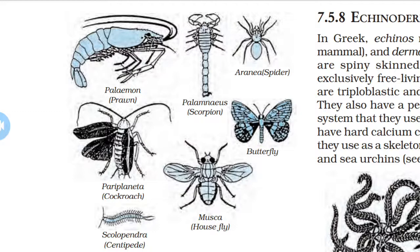In Arthropoda, blood does not flow in well-defined blood vessels, and the body cavity is blood-filled. They have jointed legs — 'arthropoda' means jointed legs. Familiar examples include prawns, butterflies, houseflies, spiders, scorpions, and crabs.